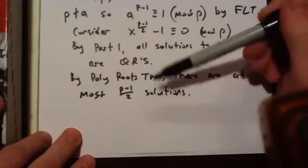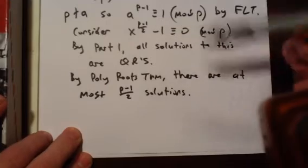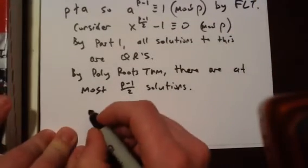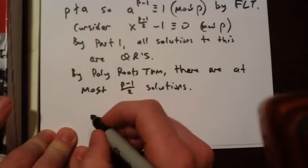So we have that there's P minus 1 over 2 solutions, and all those solutions are quadratic residues. Okay? So, now let's say this.